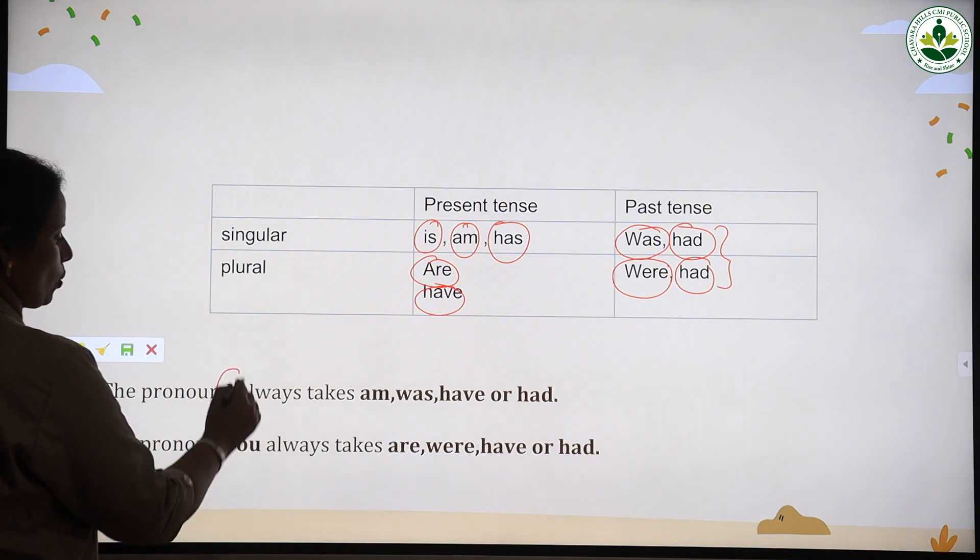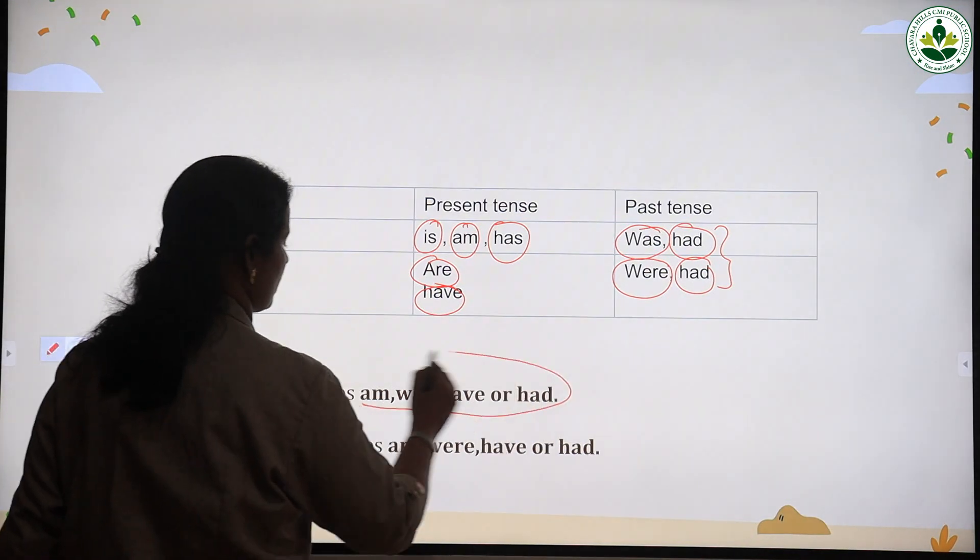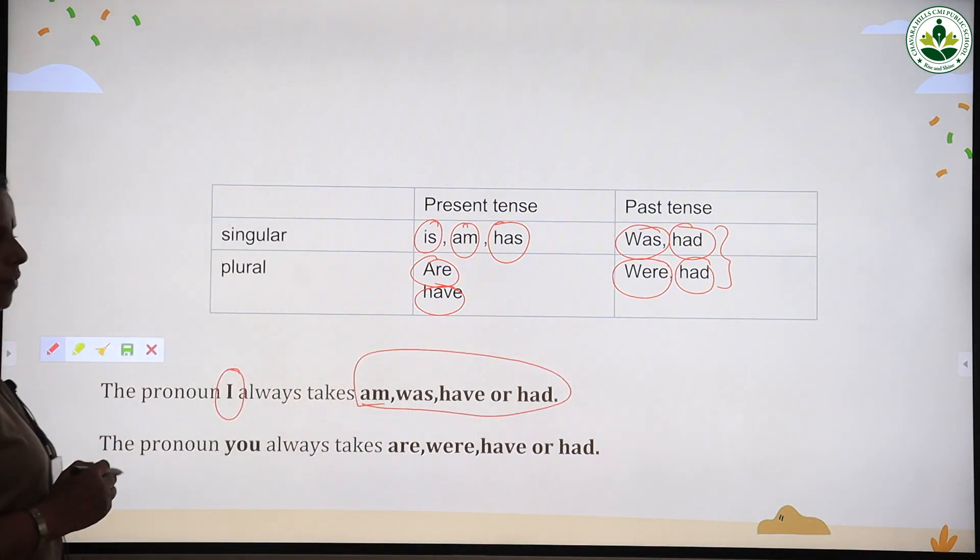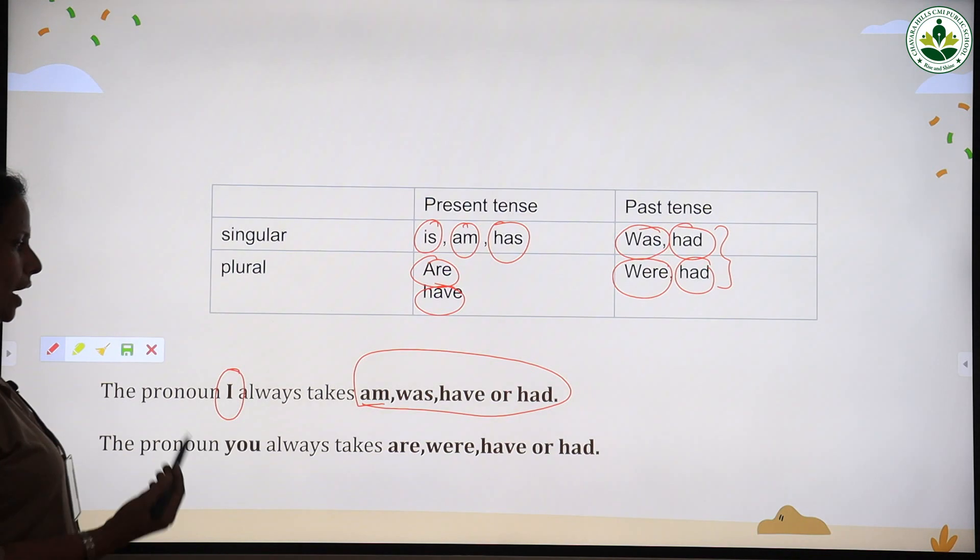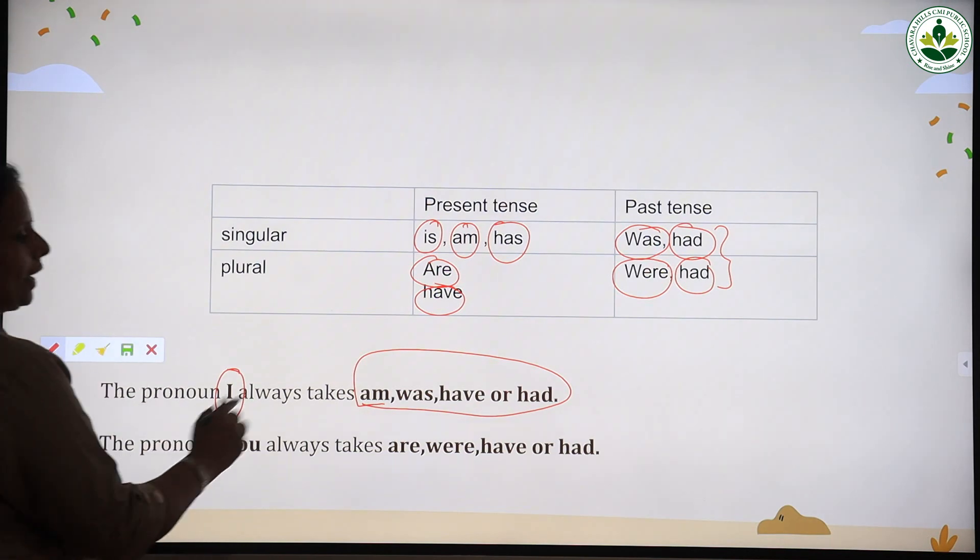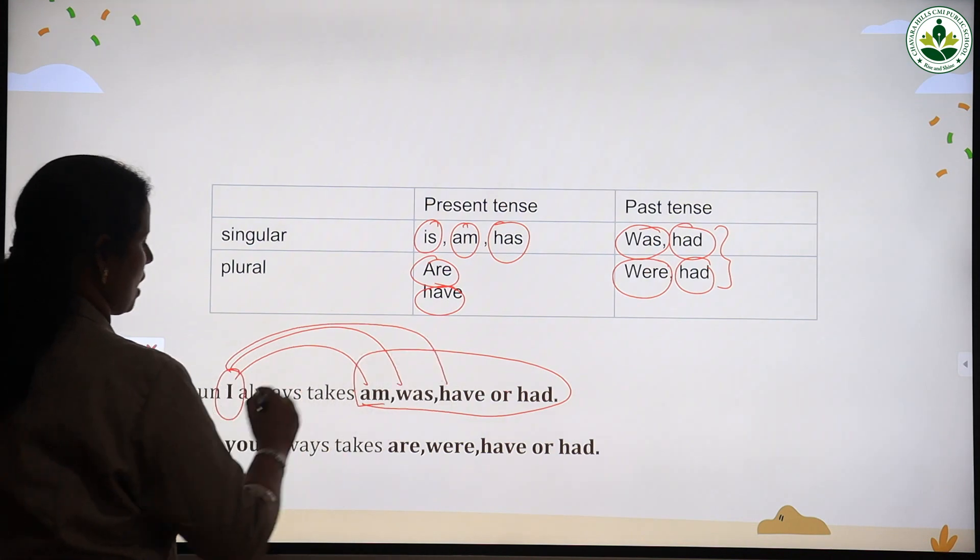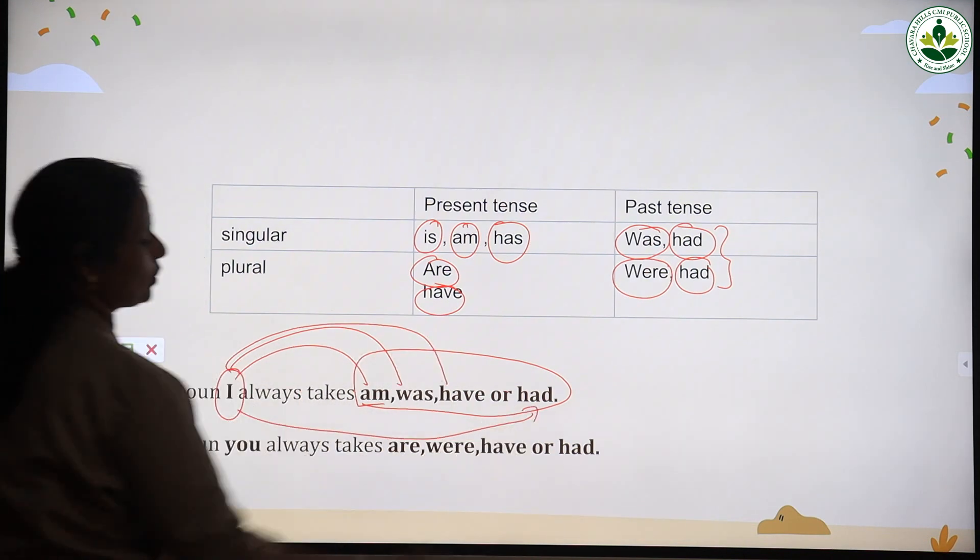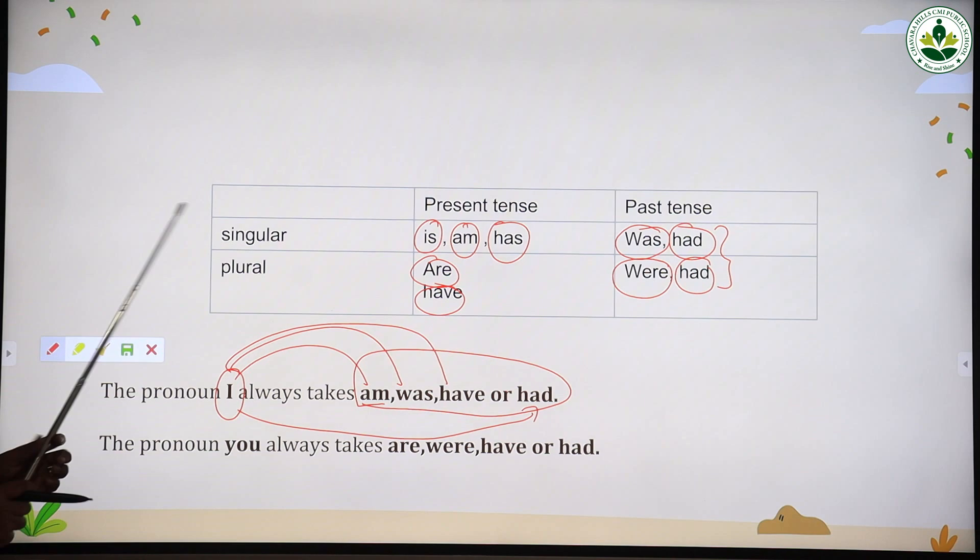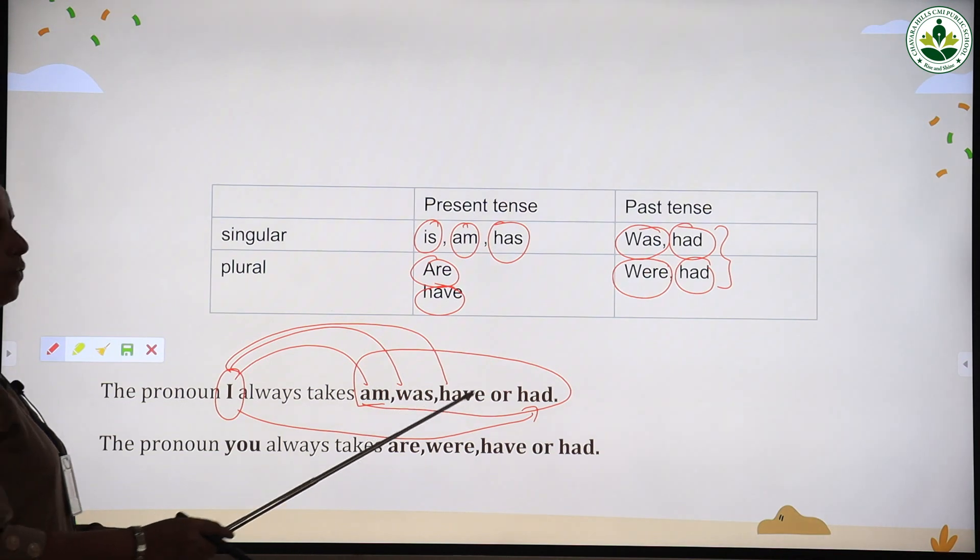The pronoun I always takes am, was, have or had. When we use the pronoun I, we always use these verbs. We cannot say I are or I is or I has. We always say I am, I was, I have, I had.